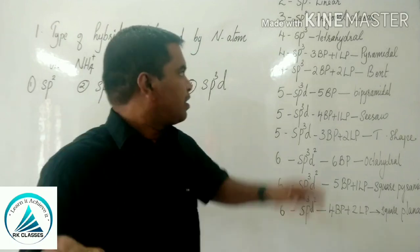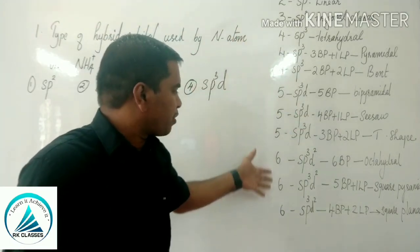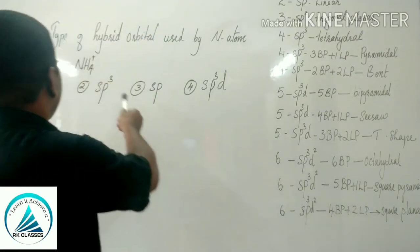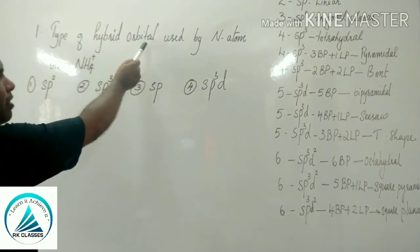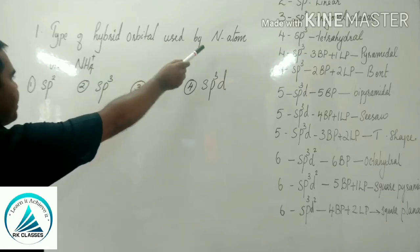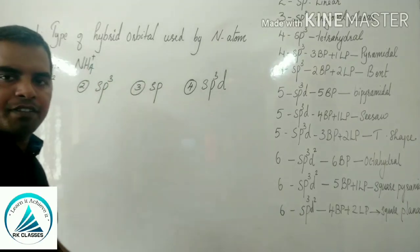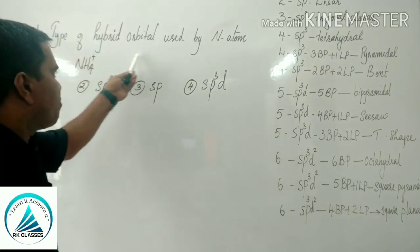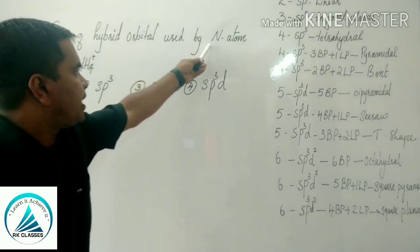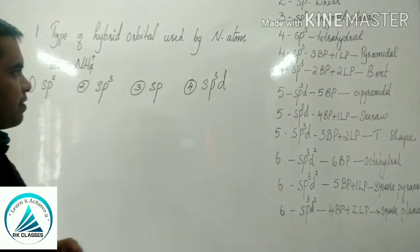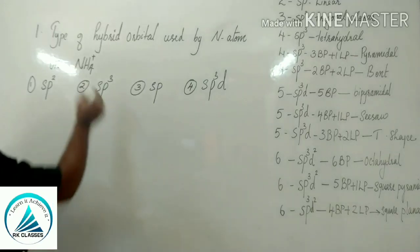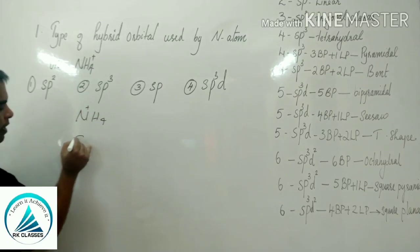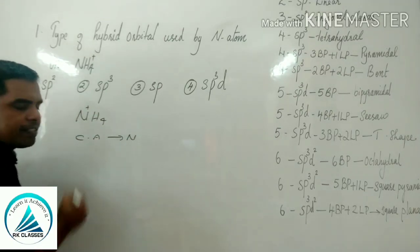Our first question is: what is the type of hybrid orbital used by the nitrogen atom in NH4 plus? Here the central atom is nitrogen.